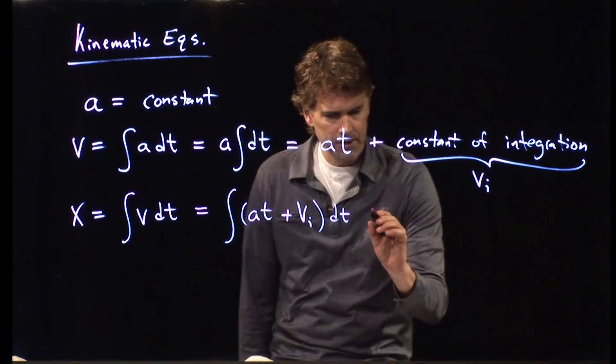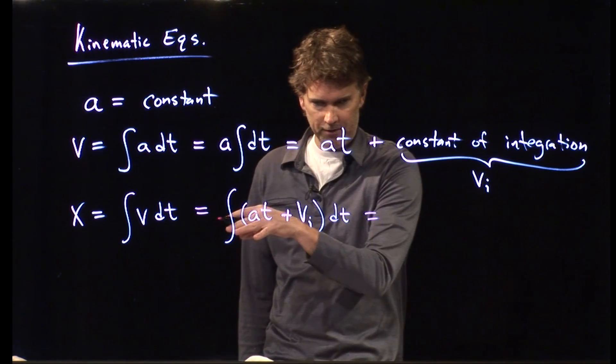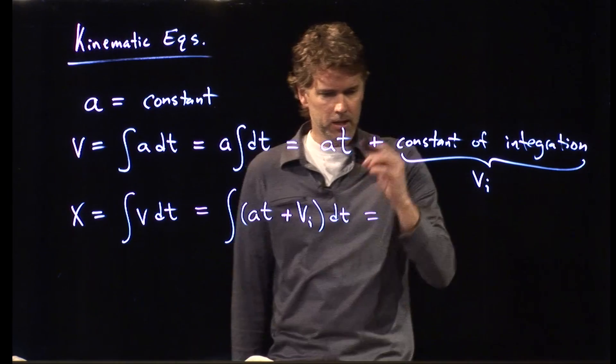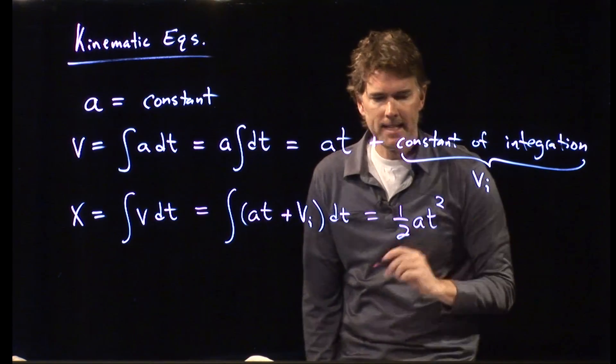And now, when we integrate this, what do we get? Well, if I integrate at, a is a constant, but the integral of t becomes t squared over 2. So, I get one half a t squared.